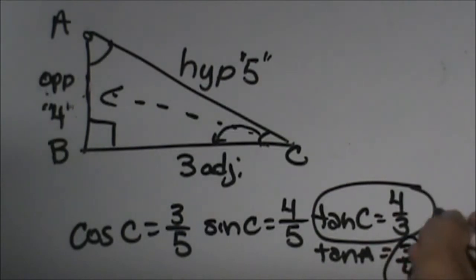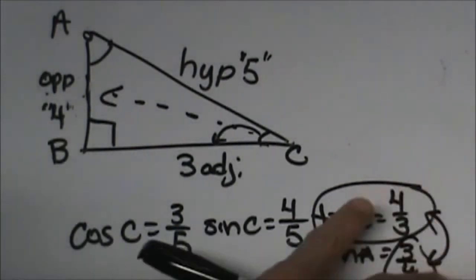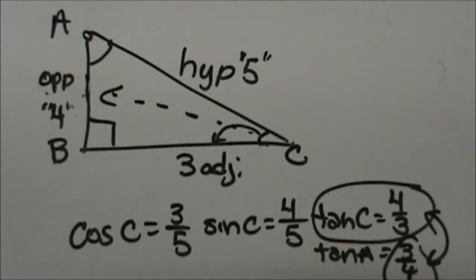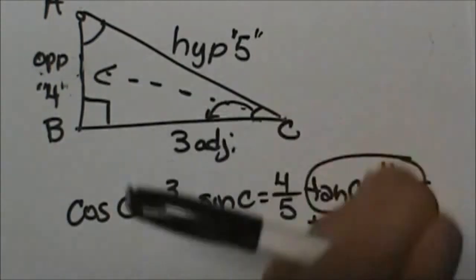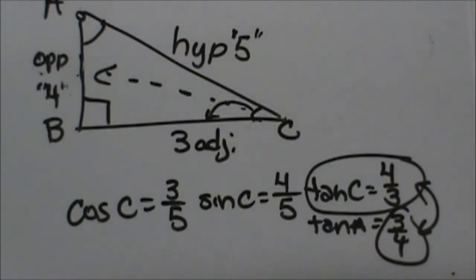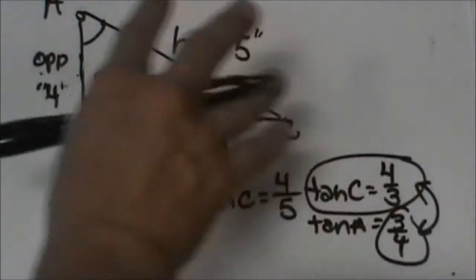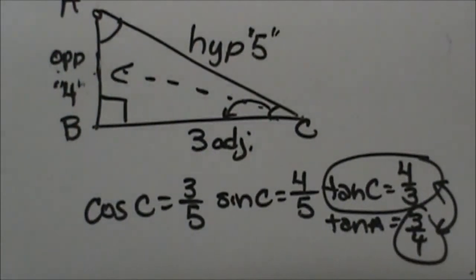What do you notice about these two ratios? They are reciprocals of each other or they are multiplicative inverses and that's why we can use that negative first degree power. So those are just some relationships within the triangle.